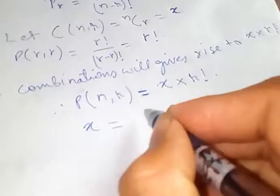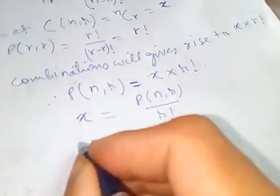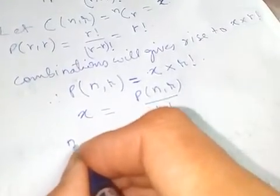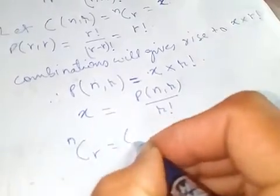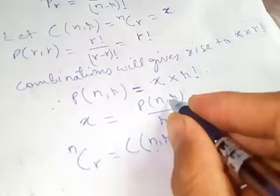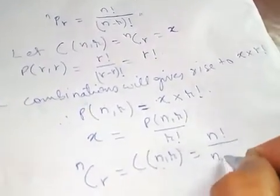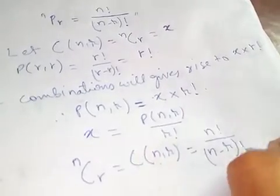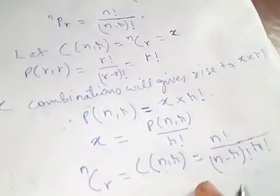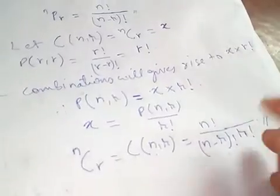Therefore x equals P(n,r) over r!. This x is the combination C(n,r) or nCr, which equals P(n,r) over r!. The combination of n objects taken r at a time, and this is our required answer.